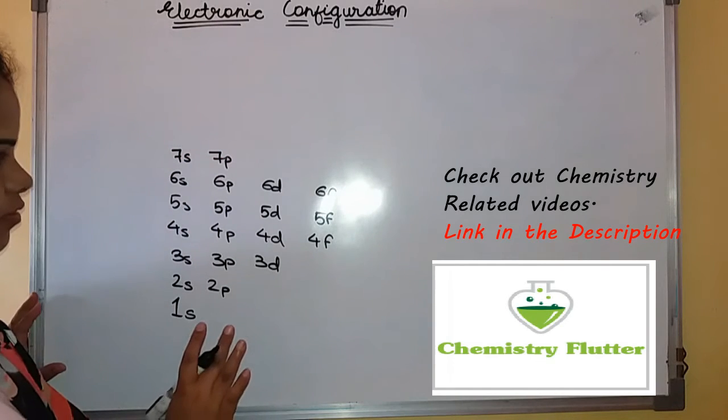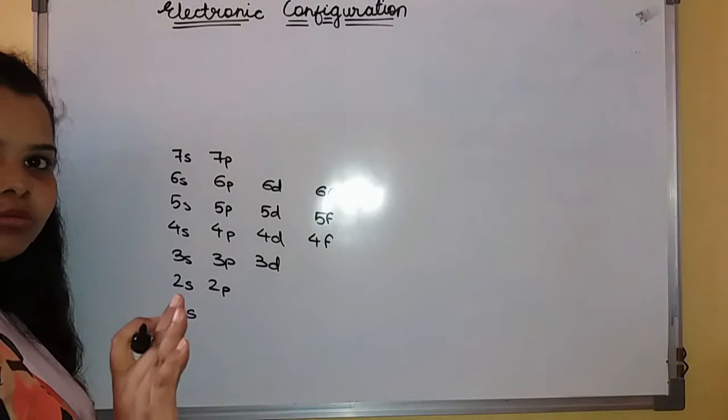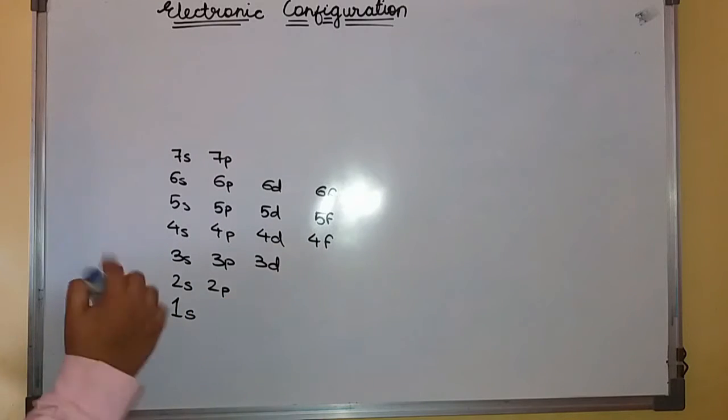Write down this sequence first on your paper whenever you are given an element and you have to write down your electronic configuration.